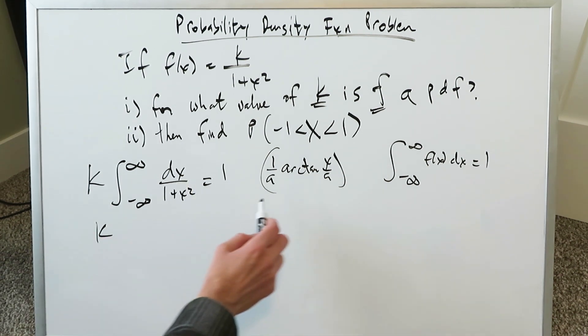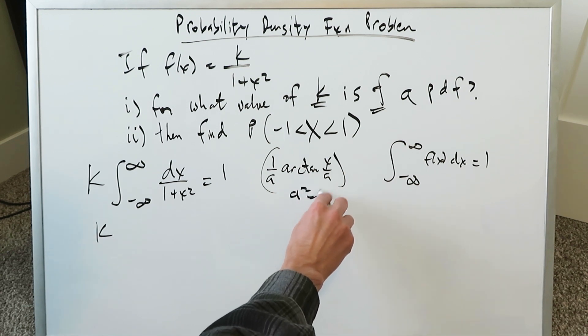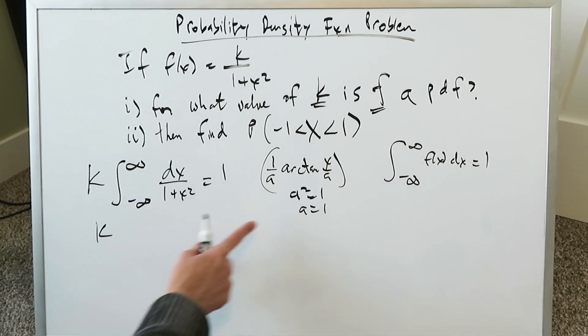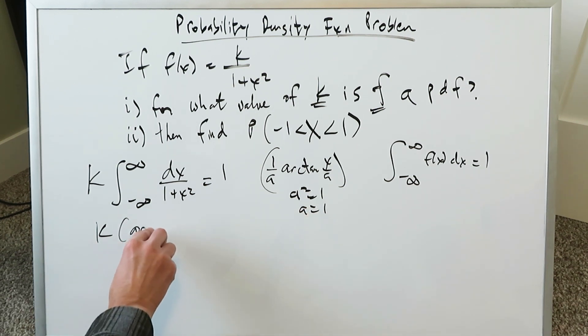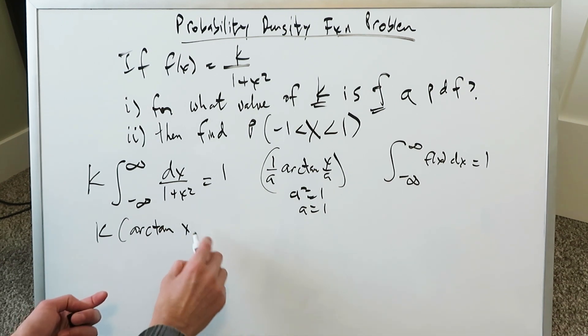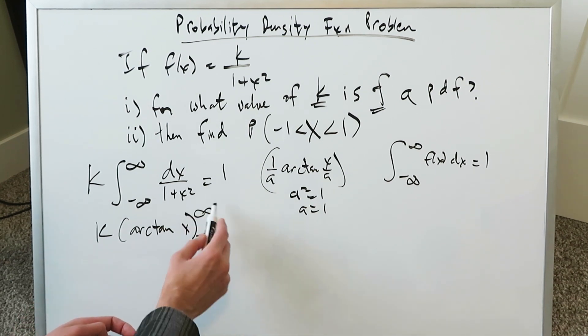I have a k, and I'm going to bring in the arctan antiderivative. Here a squared is equal to 1, a is equal to 1, therefore a is equal to 1. I'll have coming from here arctan x over a, which is just x over 1, which is just an x, from upper infinity, lower minus infinity, all equaling to 1.